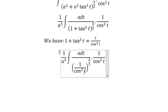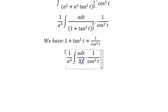We have 1 over cos² t raised to the power of 3/2, which gives 1 over cos³ t.